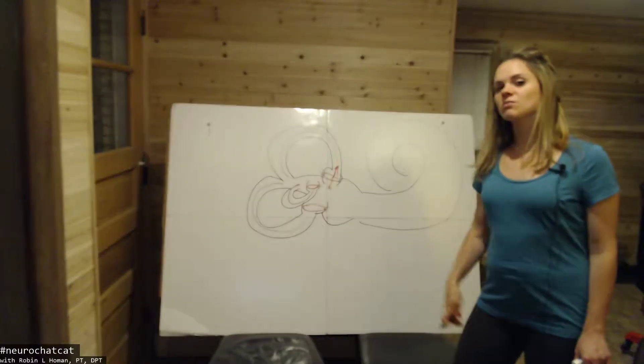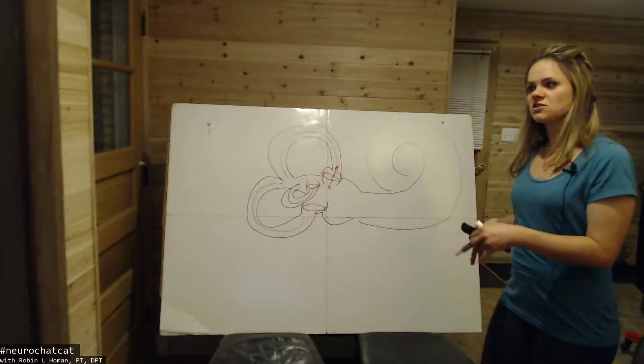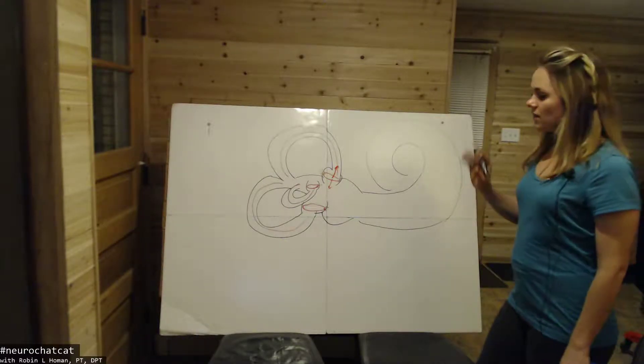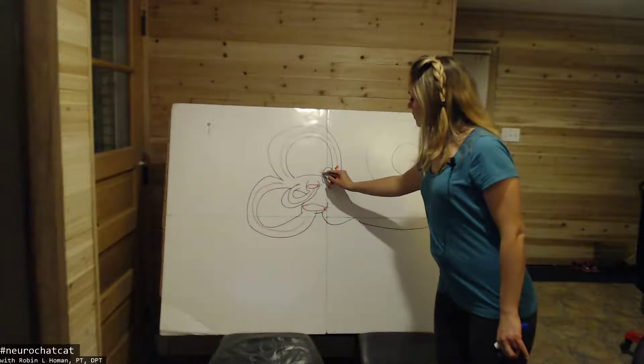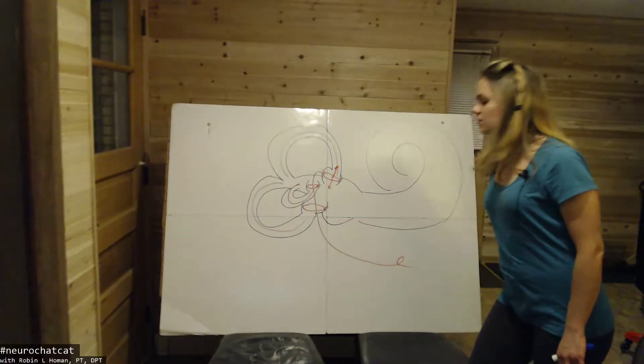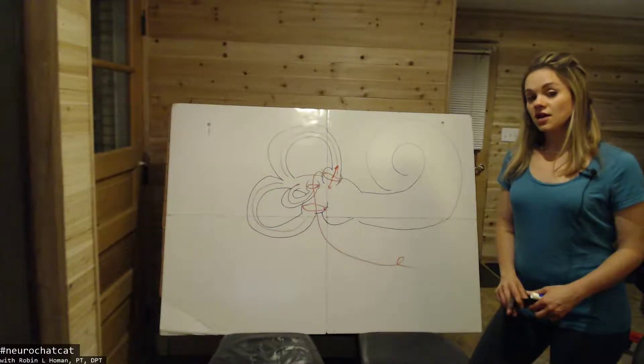Or it can inhibit, where maybe it pushes away from it, bends the hair cell in the opposite direction and says, I was inhibited. Needless to say, that impulse is what goes down into the afferent eighth cranial nerve.